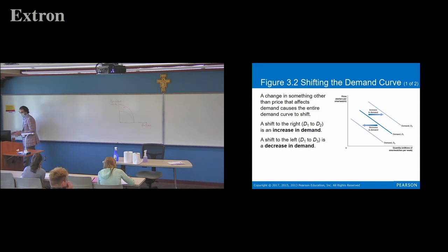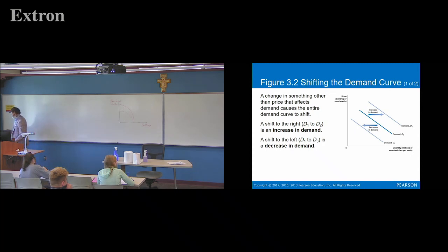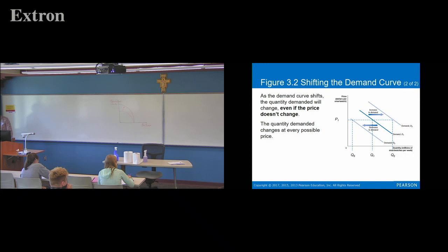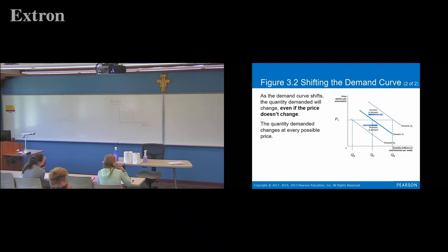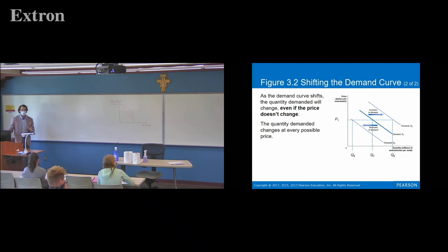Before, we were holding all things equal. Now we're allowing other things to change besides price — which is much more realistic for what happens in a market. We stay at this initial price P1 where market demand was at Q1. If we shift the curve to the right, the quantity of smartwatches demanded increases even when the price stays the same. If we decrease demand and shift to the left, the quantity demanded is much lower even at the same price. When we experience a shift in the demand curve, the quantity demanded changes even when price doesn't change.